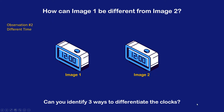Observation two: different time. Another way could be different times. For example, one clock could be set to 12 a.m., and the other clock could be set to 12 p.m.